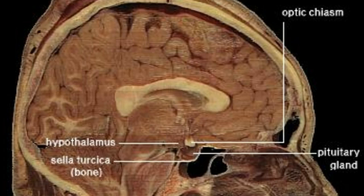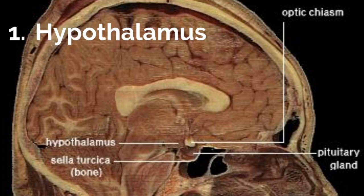The first specific biological cause involves the hypothalamus. Recall that the hypothalamus is a brain structure that regulates hunger, thirst, sexual behavior, and a wide variety of emotional behaviors. Animal studies indicate that targeted damage of certain areas of the hypothalamus results in extreme changes in eating, though it's important to note that at this time there is no evidence of consistent abnormalities of the hypothalamus in humans.